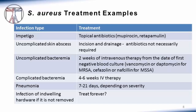For uncomplicated skin abscesses, incision and drainage alone may be all that's required for a patient who is not systemically unwell — those patients may not need antibiotics at all. Drain the pus and the patient is likely to do well with or without antibiotic therapy. Contrast that with complicated skin infections where the patient is febrile or systemically ill — those patients should receive antibiotics. For uncomplicated bacteremia, treatment is all intravenous and should last at least two weeks from the date of the first negative blood culture. For MRSA, use vancomycin or daptomycin; for MSSA, use a beta-lactam such as cefazolin or nafcillin.